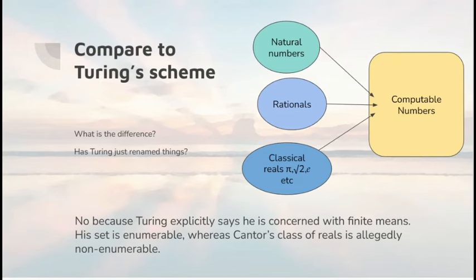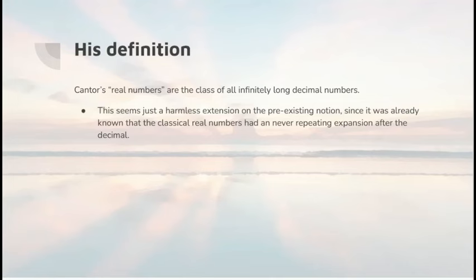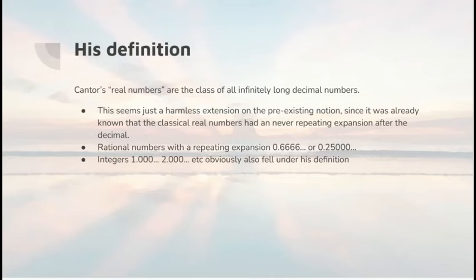That there were more than an infinite number of reals. What does he call his real numbers? Infinitely long decimal numbers. Now, this seems a harmless extension, since we already knew that things like pi and root 2 have non-repeating decimal expansions. And obviously, a rational number can also be written down to an arbitrary decimal precision, as can an integer.